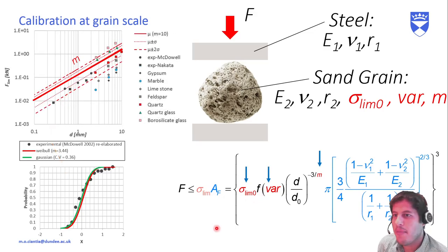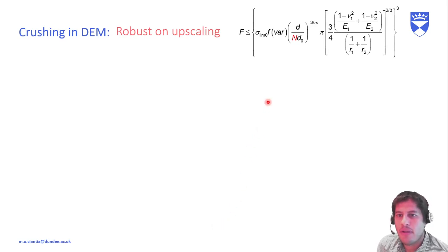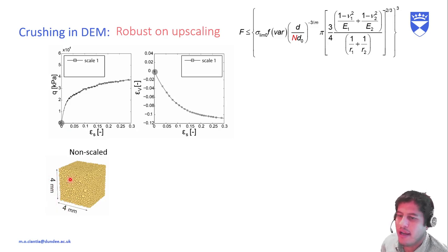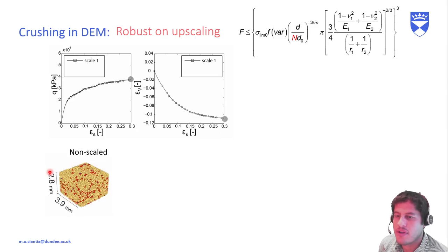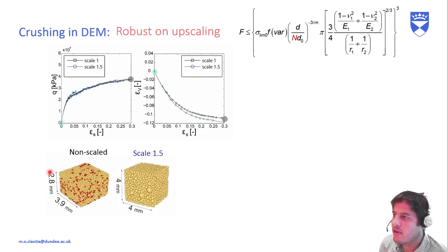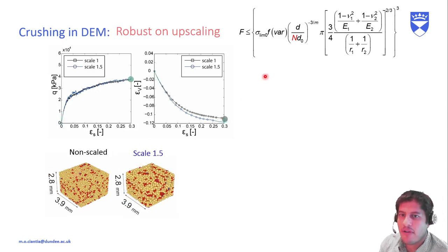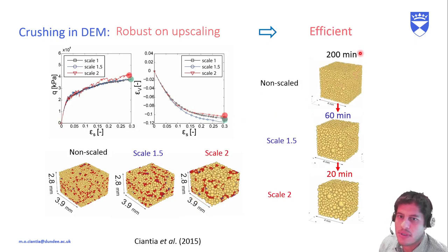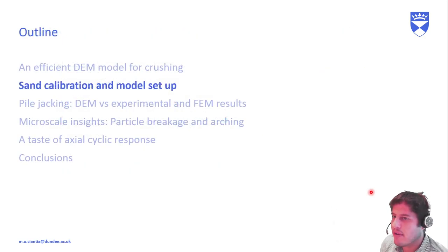We calibrate the model at the grain scale through single-particle crushing, and the crushing model was framed to be scalable. This means we introduced a scaling factor N in the failure criterion. If you do a virtual triaxial compression on a non-scaled sample — for example, a very small 4 mm by 4 mm sample — you get a stress-strain response. If you scale the particles up to decrease the number of particles in the model, you don't want the crushing criterion to affect the results. With the scaling factor, it is possible to obtain the same stress-strain response while cutting the computational cost and still matching the particle size distribution.